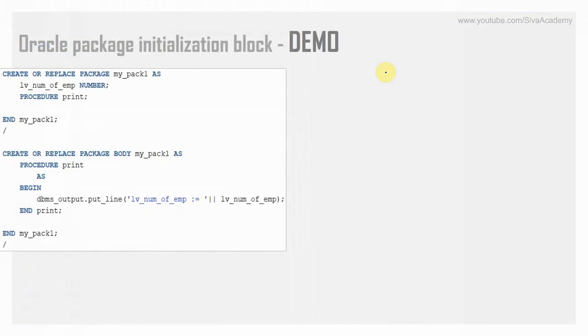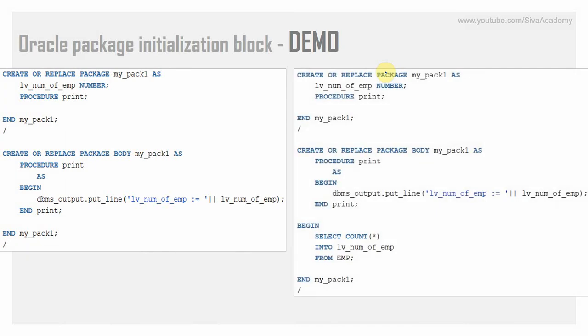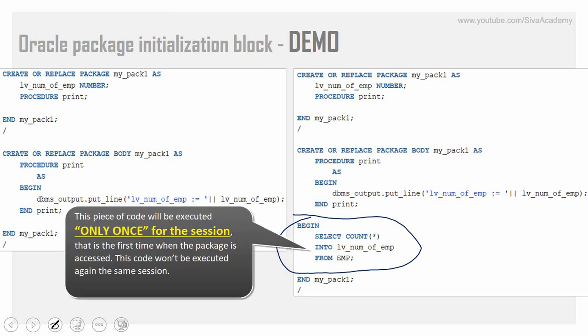Here is the same package with one additional section added at the end of the package body, which starts with the BEGIN keyword and contains a SELECT statement — but this block does not have any END keyword. This is called the package initialization block, or one-time-only procedure. There are a few rules: it has to appear only at the end of the package body, just before the final END keyword. The advantage is that this block will get executed the first time you access any variable or API of the package.